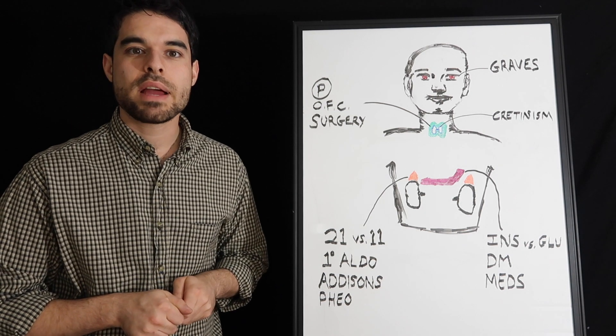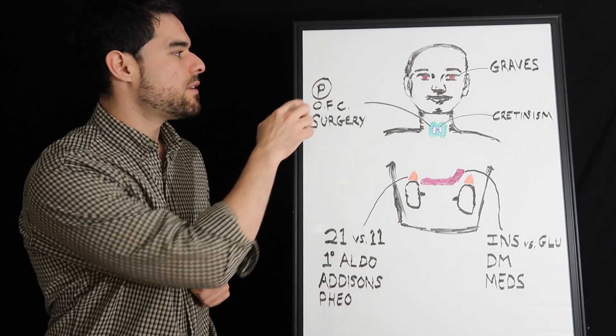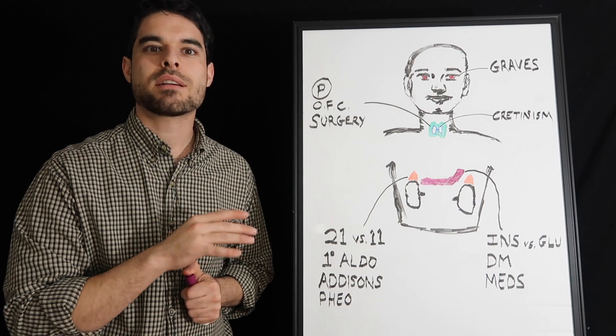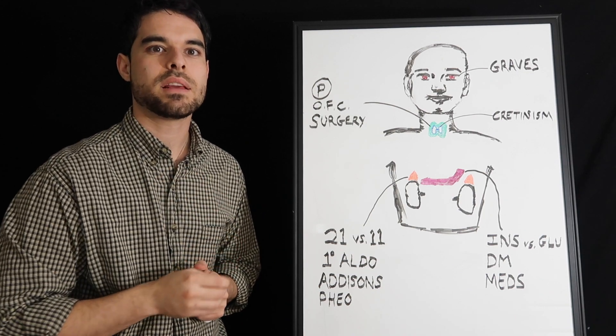Next, the parathyroid glands. Know that what stimulates them more than anything is phosphate. So if you have renal failure, it's not going to be the calcium. It's going to be the phosphate that stimulates them more than anything. It really boosts them into overdrive.